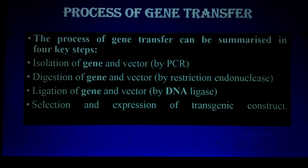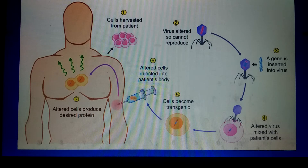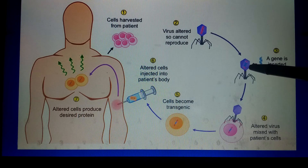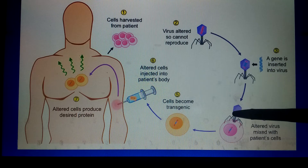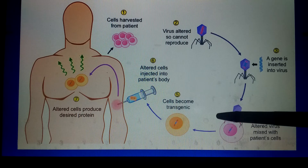The fourth step is the selection and expression of the transgenic construct. As shown here: first, cells are harvested — diseased cells are removed from the patient's body. Second, a virus, maybe a retrovirus or any other virus, is first genetically modified or altered and used as a vector. The gene of interest is then inserted into that vector, which is then mixed with the harvested cells.